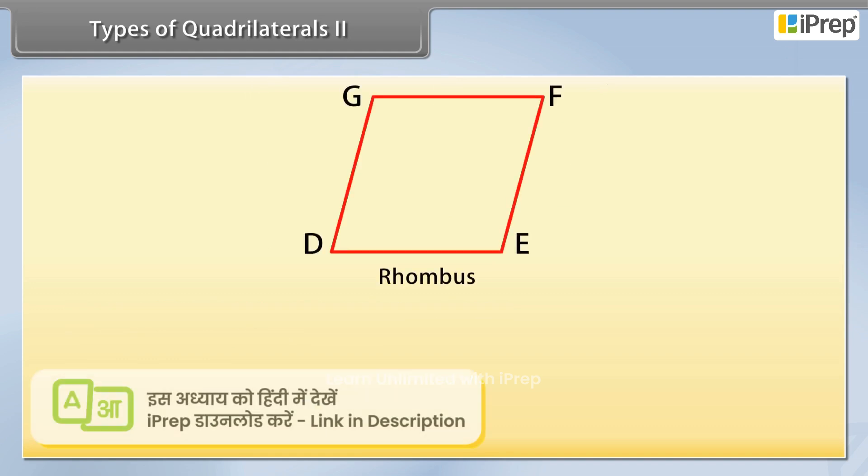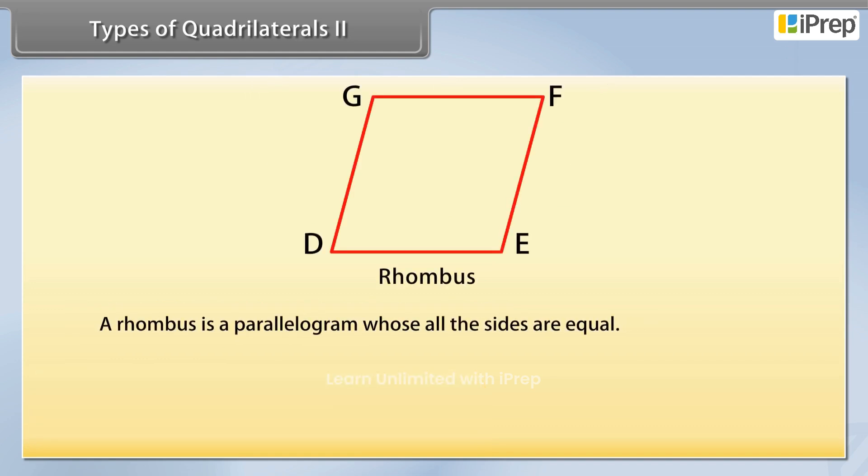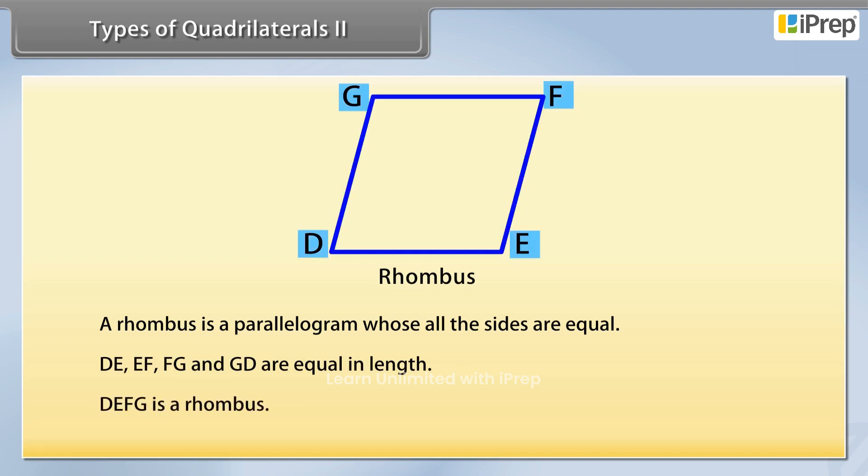Next is rhombus. A rhombus is a parallelogram whose all sides are equal. Here lines DE, EF, FG and GD are equal in length. So DEFG is a rhombus.